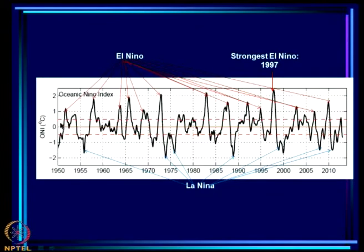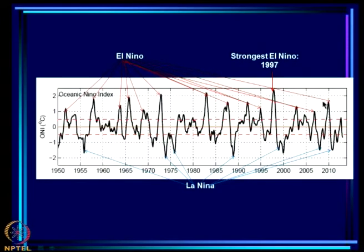If the 3-month running mean ONI is greater in magnitude than 0.5°C, it is called El Niño if the anomaly is positive, or La Niña if it is negative. The ONI index plotted from 1950 to 2011 shows the ±0.5 threshold lines in red. When anomalies exceed +0.5 these are El Niños; when the index dips below −0.5 these are La Niñas. The highest anomaly ever recorded is in 1997 — the strongest El Niño.